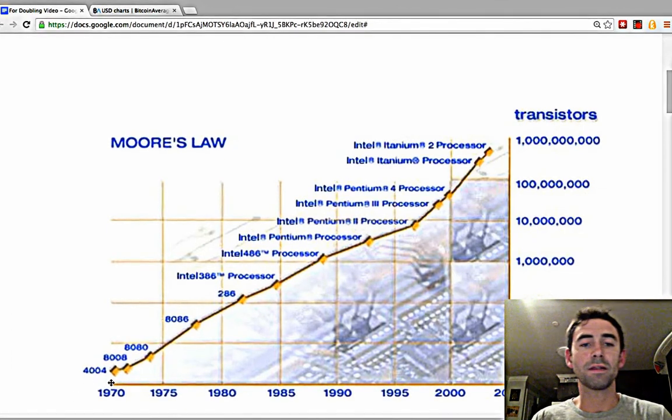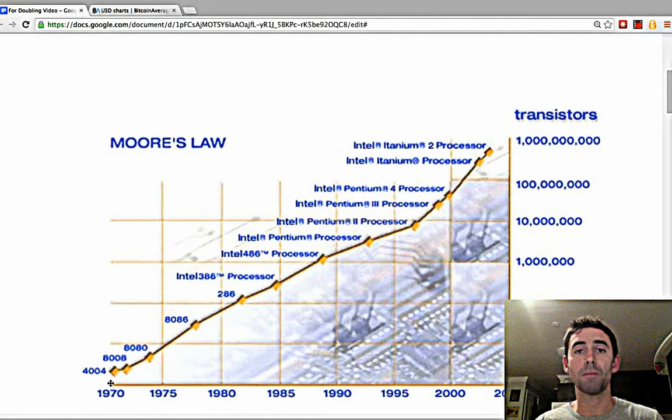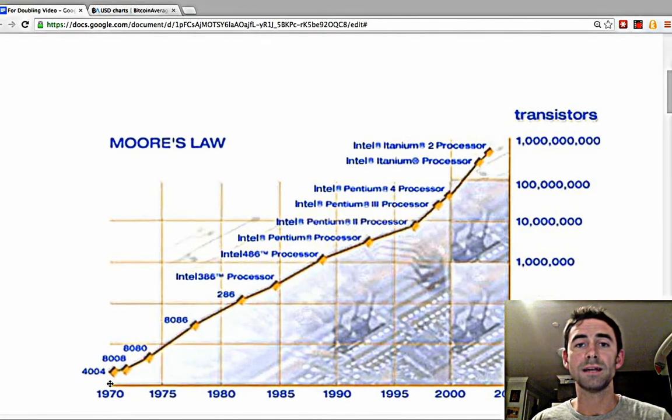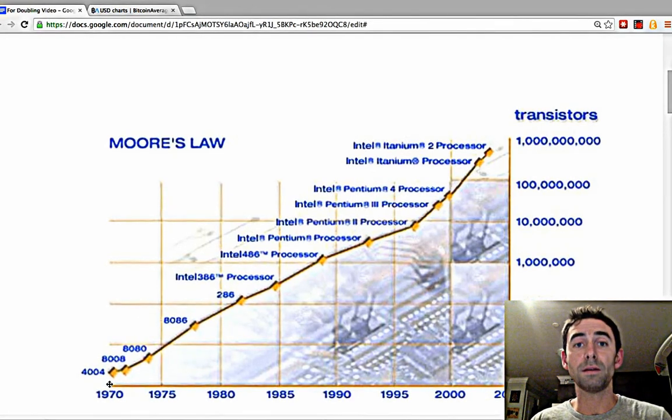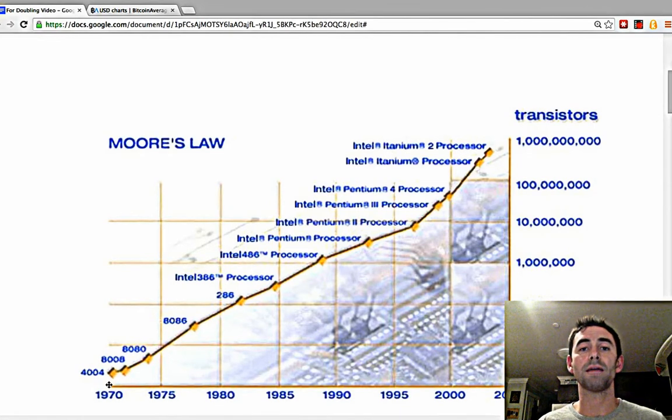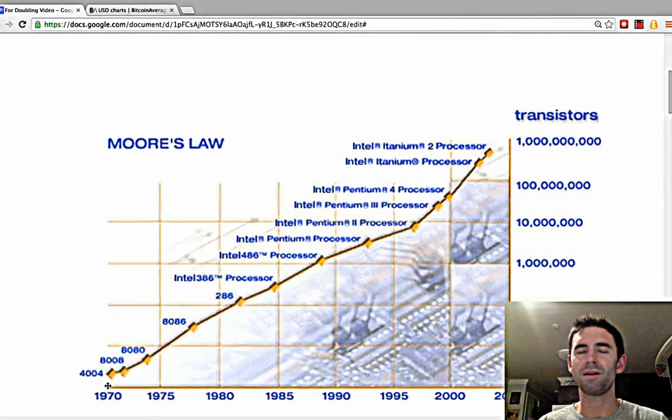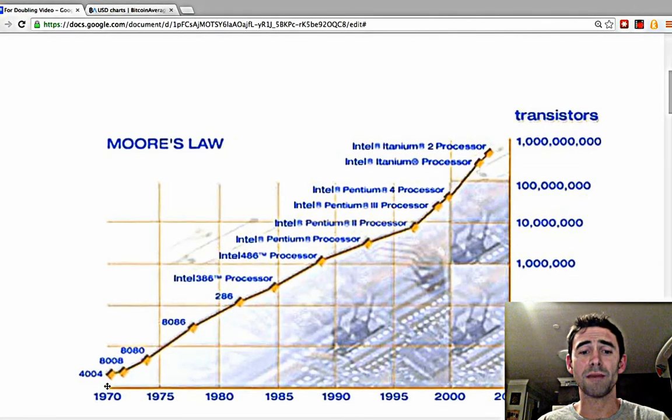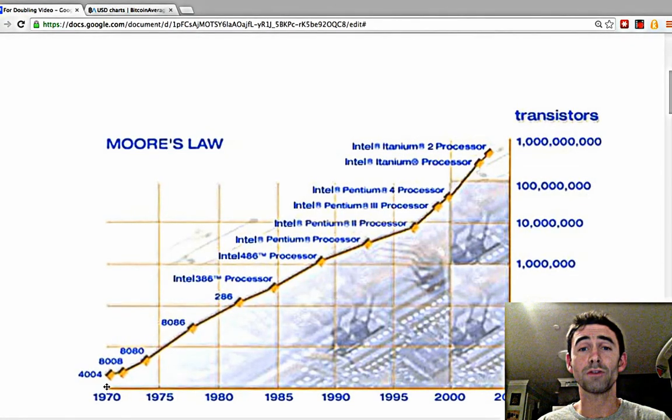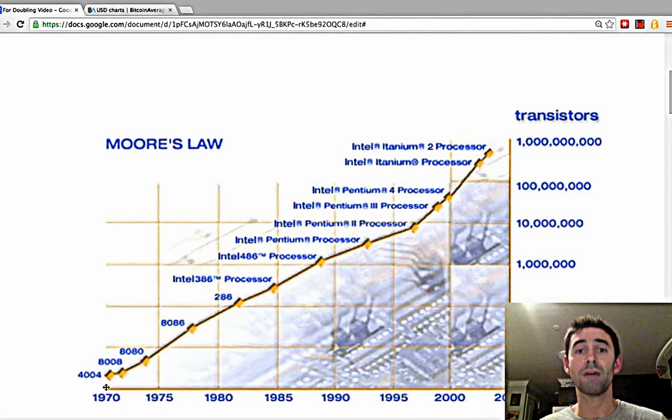Back in the 70s there were very few transistors per chip, but this guy at Intel said the number of transistors per chip is doubling every two years, every 24 months. Amazingly, very few people would have believed this back in the 70s, but this trend continued until now, 45 years.